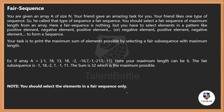Read the description carefully. The question says: 'Fair Sequence' — you are given an array A of size N. Your friend gave you an amazing task; your friend likes one type of sequence which they call a fair sequence. You should select a fair sequence of maximum length from the array. A fair sequence means you have to select elements in a pattern: positive element, then negative element, then positive element, then negative element — alternating.